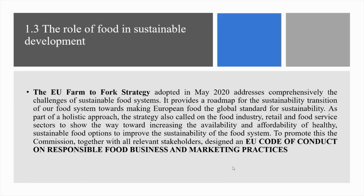Subchapter 1.3: The Role of Food in Sustainable Development. The EU Farm to Fork Strategy, adopted in May 2020, addresses comprehensively the challenges of sustainable food systems. It provides a roadmap for the sustainability transition of our food system towards making European food the global standard for sustainability. As part of a holistic approach, the Strategy called on the food industry, retail and food service sectors to increase the availability and affordability of healthy, sustainable food options. To promote this, the Commission, together with all relevant stakeholders, designed an EU Code of Conduct on responsible food business and marketing practices.